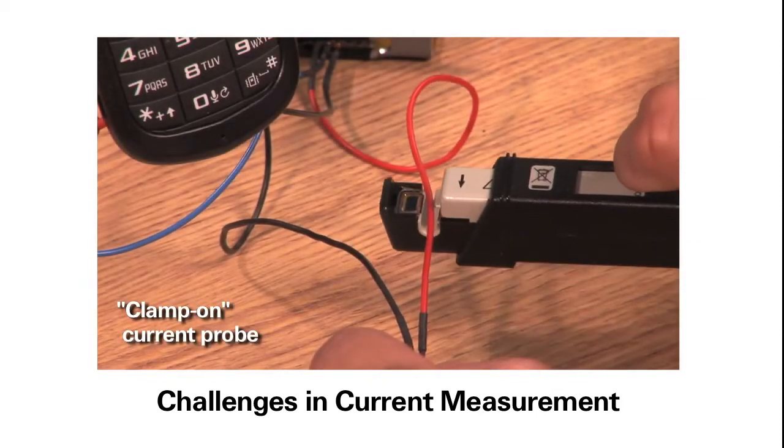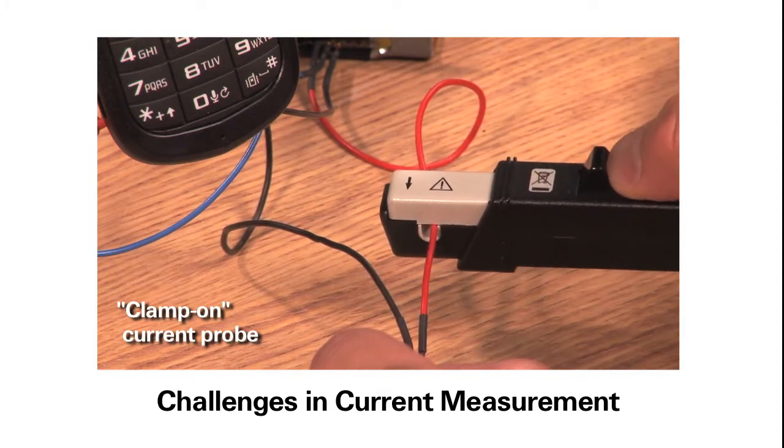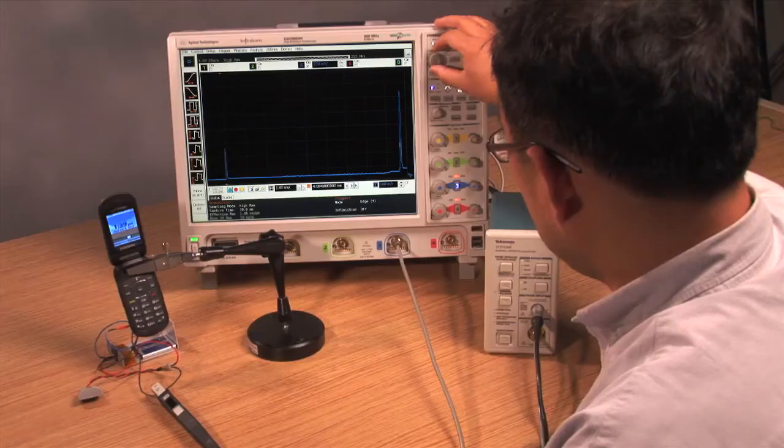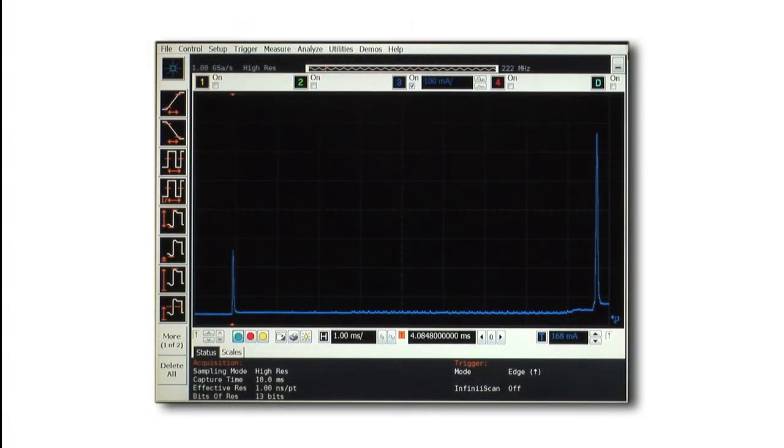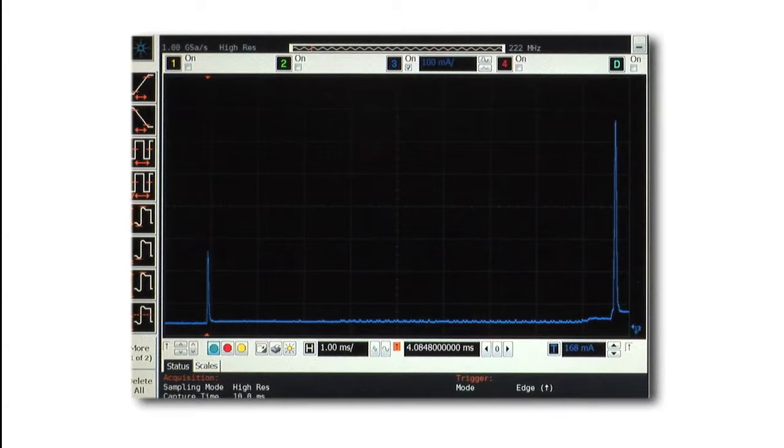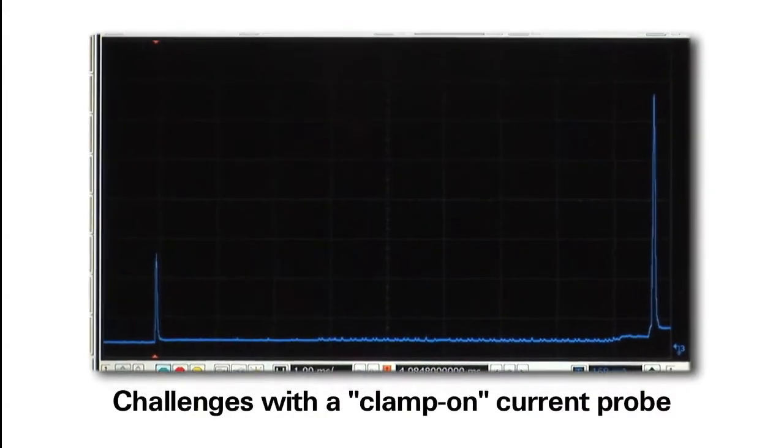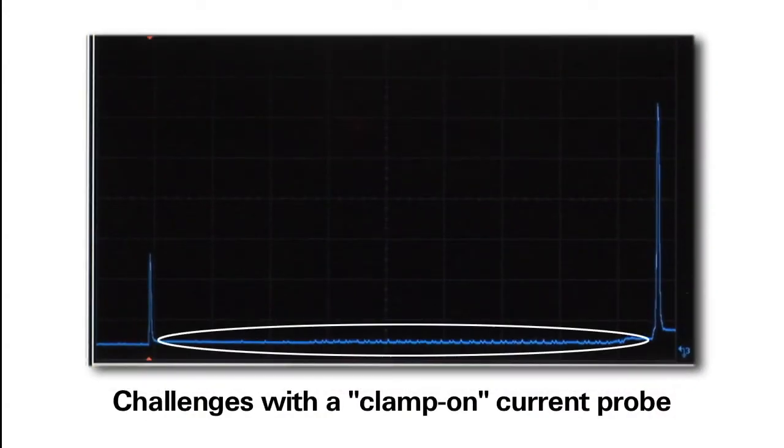Unfortunately, this approach is not appropriate for measuring small currents that rapidly change between sub milliamps and several amps. As a result, in this example showing the current consumption of a mobile phone, the dynamic behavior of the phone's low-level current is not measurable.